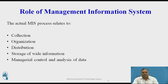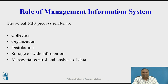The actual MIS process relates to collection, organization, distribution, storage of wide information, and managerial control and analysis of data. In collection, we gather data from the system. Organization means we are pre-processing or processing that data into a particular form. Distribution means we are distributing that data among different parts or units of the organization. Storage means we are storing large amounts of data over long periods using MIS. Managerial control and analysis means we can manage and analyze that data for a specific purpose.